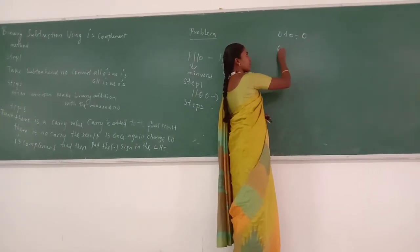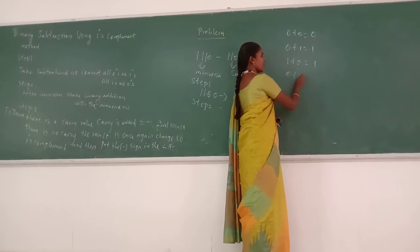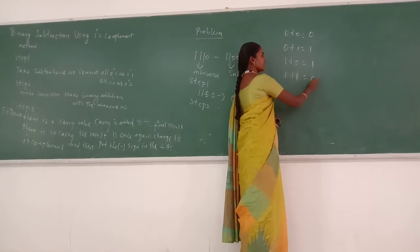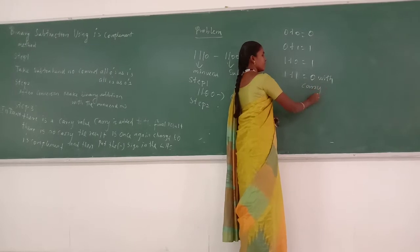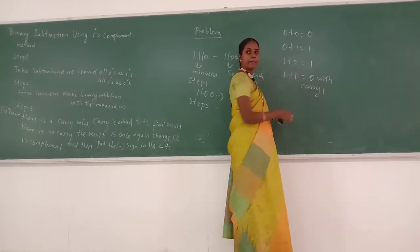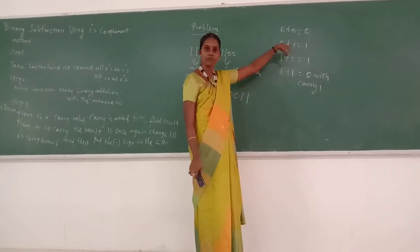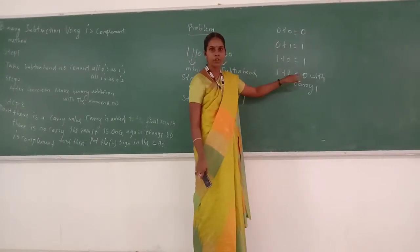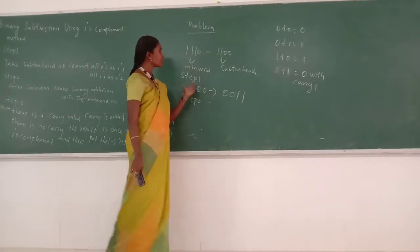The basic binary addition rules are: 0 plus 0 equals 0; 0 plus 1 equals 1; 1 plus 0 equals 1; 1 plus 1 equals 0 with carry 1. Now we have to apply the problem.